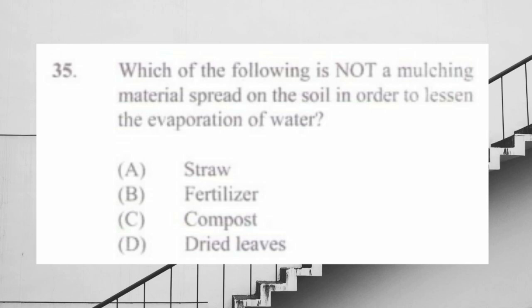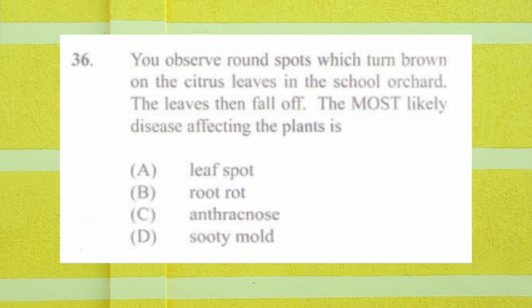Question number thirty-five: which of the following is not a mulching material spread on the soil to lessen evaporation of water? a) straw, b) fertilizer, c) compost, d) dried leaf. The answer is b) fertilizer.